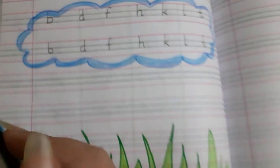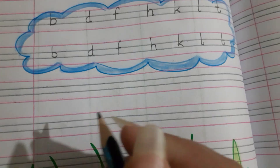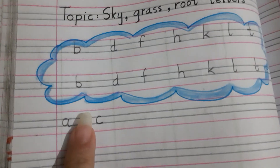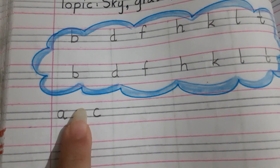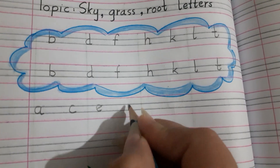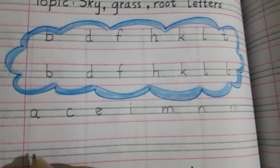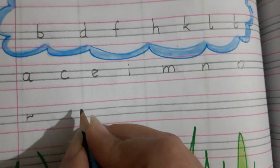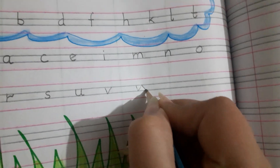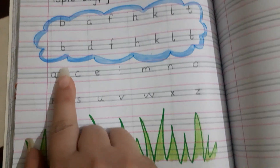Now we are going to write our grass letters. As I told you, grass letters are 14 letters. So let's start: A, C. Remember one thing — you have to give one finger space, so that your work will be neat. E, I, M, N, O, R, S, U, V, W, X, Z.